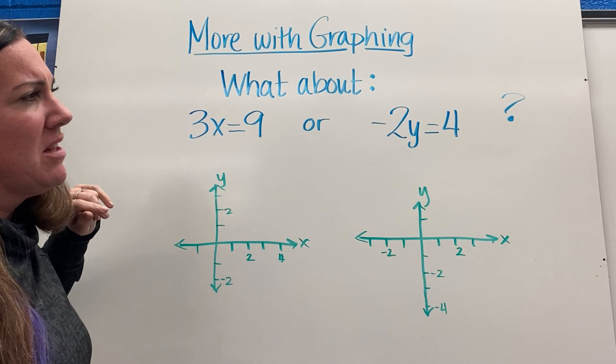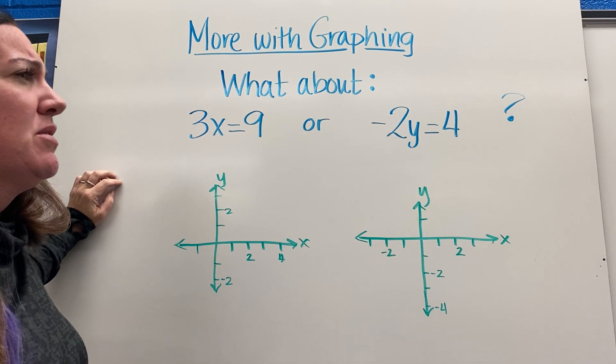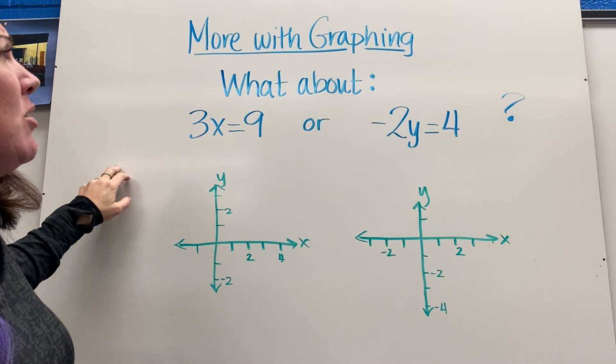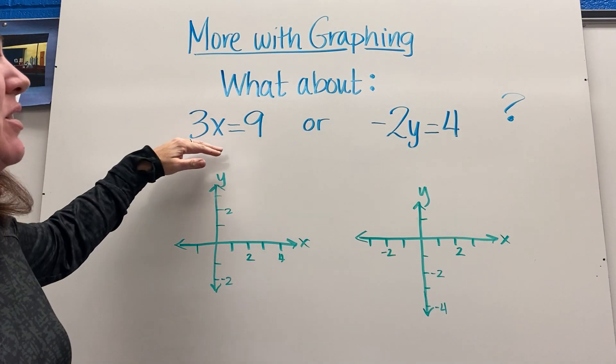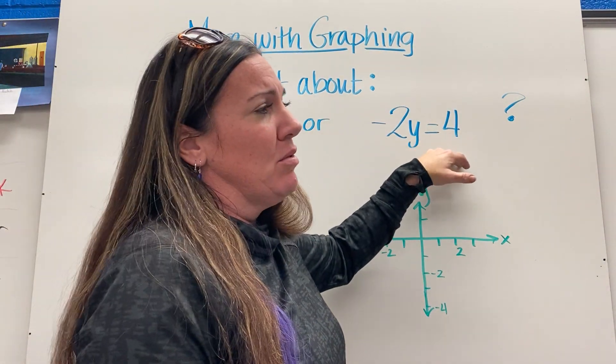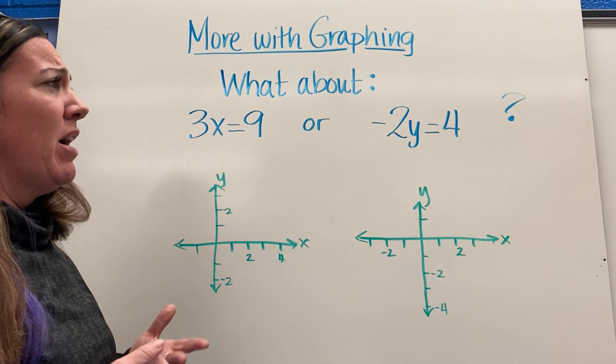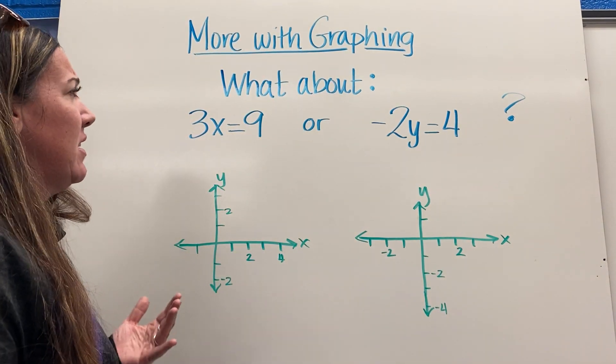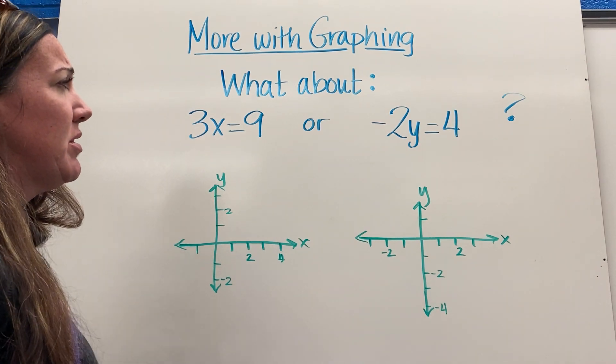Today we're just going to add a little bit to that. The question is, what about if I have an equation like 3x equals 9 or negative 2y equals 4? How do I graph that when I don't have the other variable to set equal to zero?